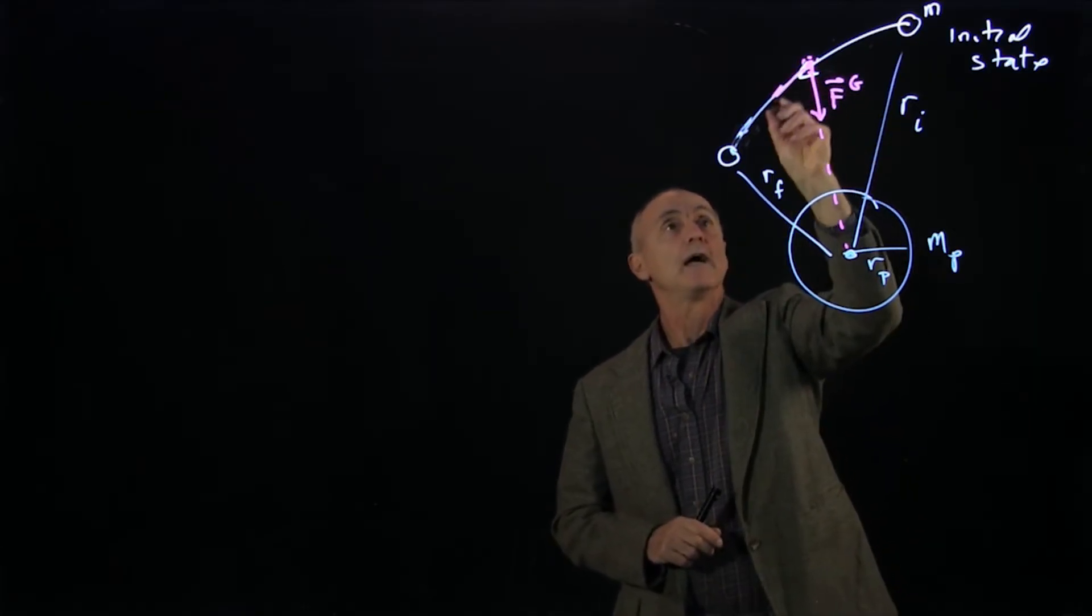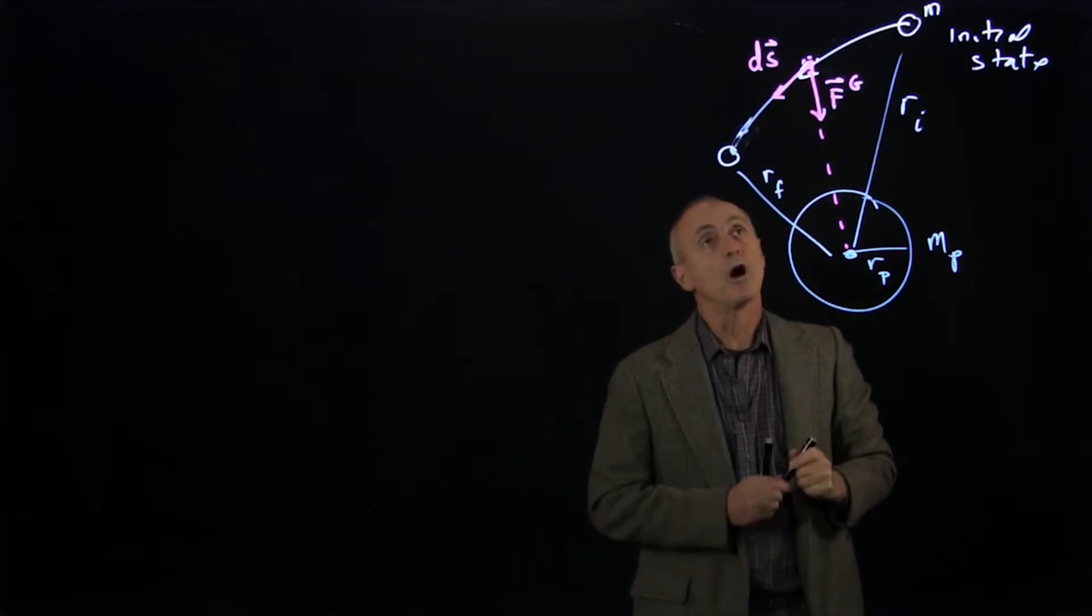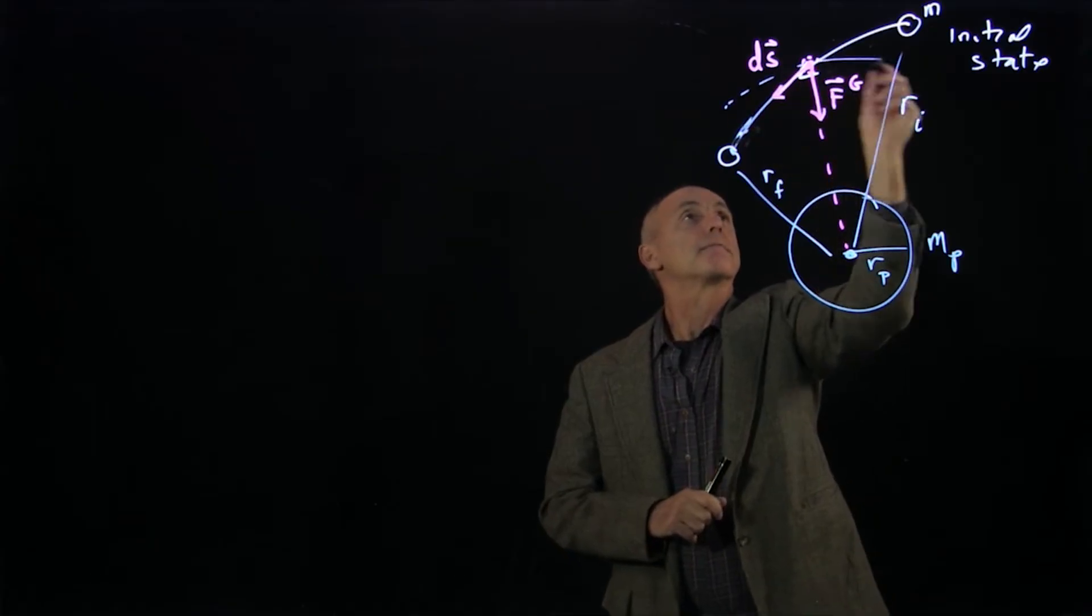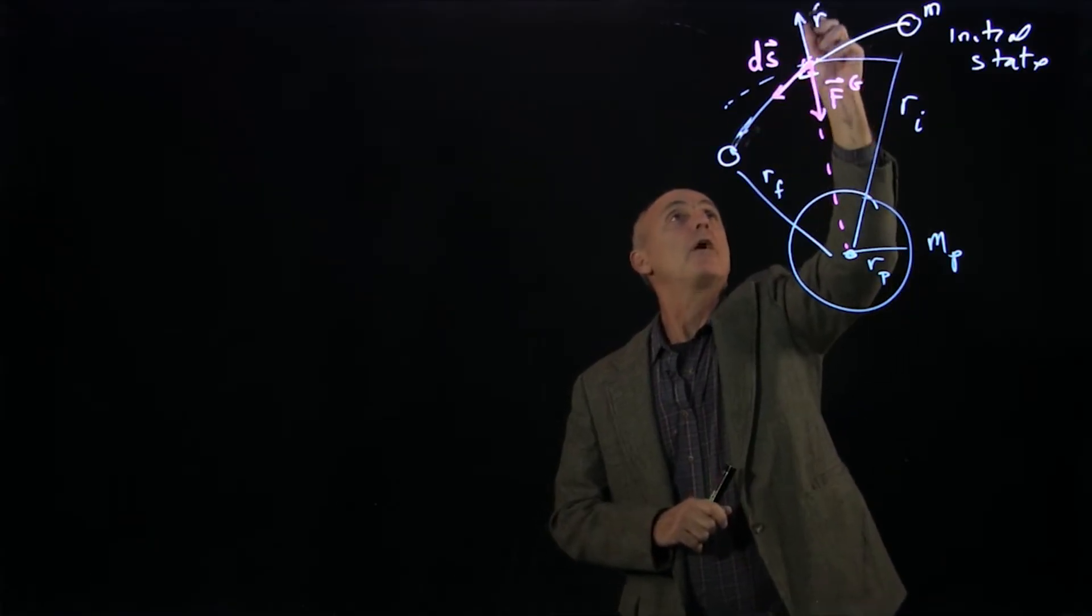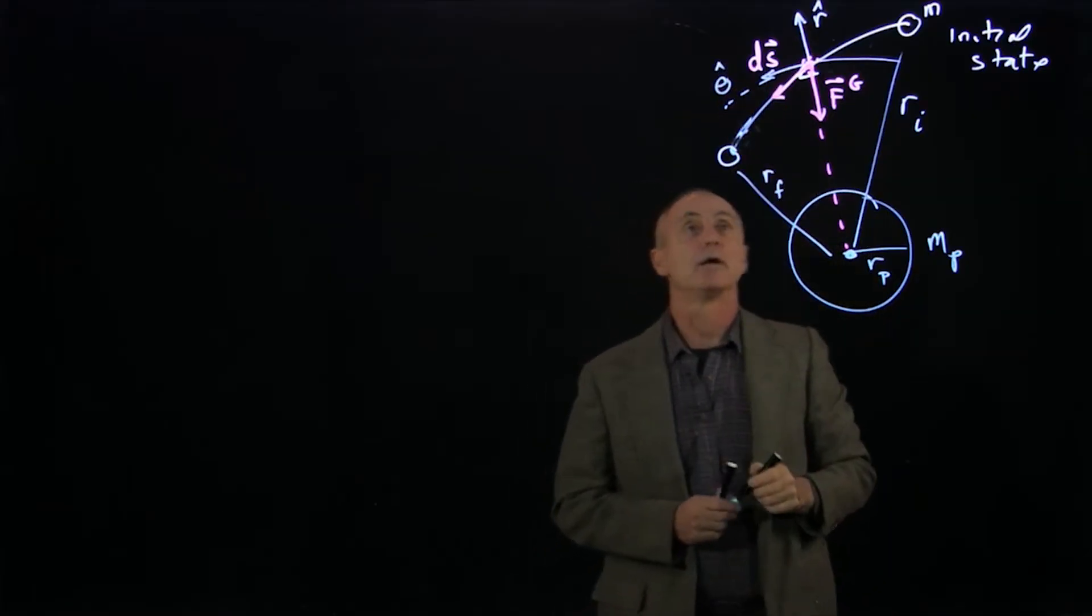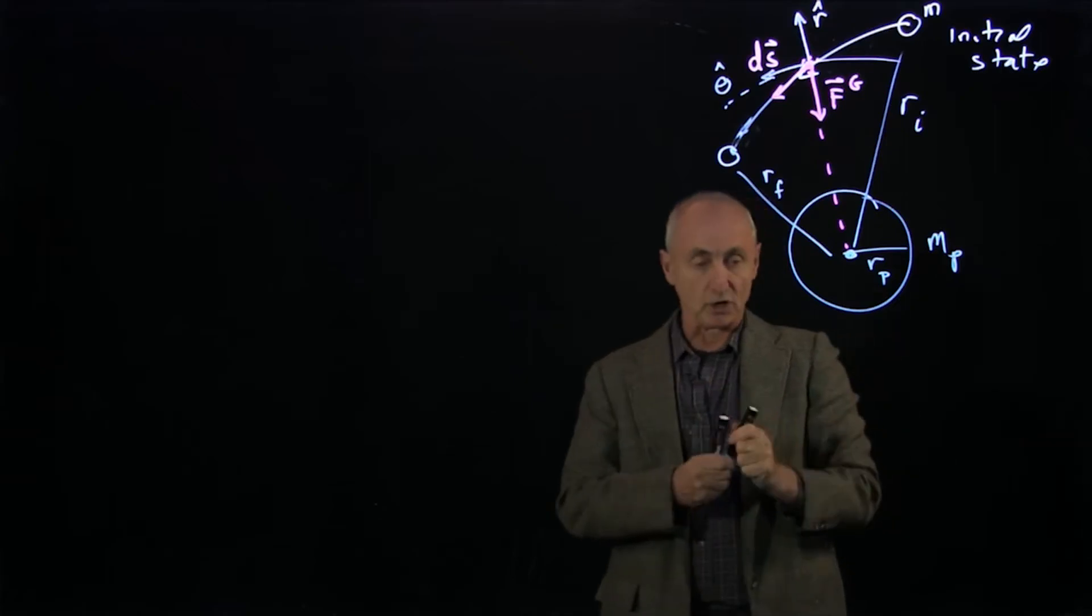Here's our object, and it's being displaced a distance ds. So our coordinate system is polar. Let's call r hat this way and theta hat that way. Let's blow up our little displacement in terms of our coordinate system, just so that we see what's happening.